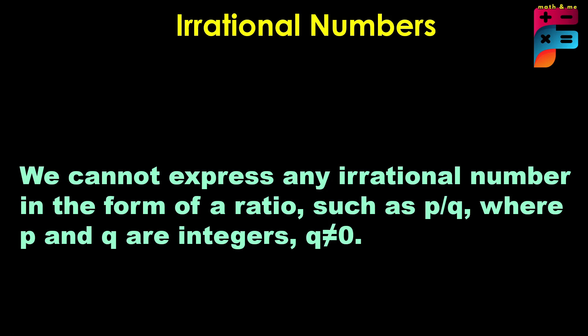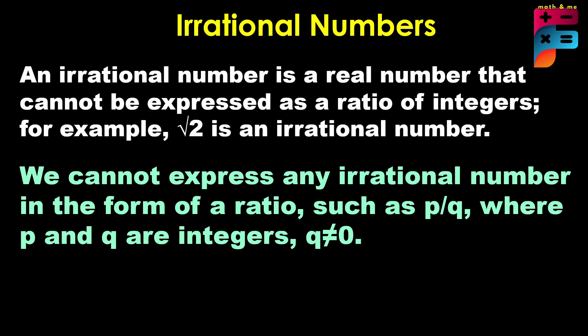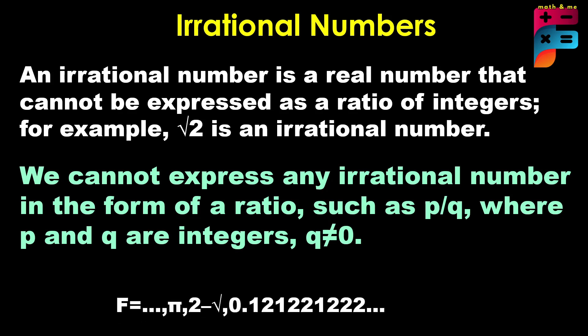Irrational numbers. An irrational number is a real number that cannot be expressed as a ratio of integers. We cannot express an irrational number in the form p/q where p and q are integers and q is not equal to 0. Examples include √2 and π. Note that a non-repeating, non-terminating decimal like 0.1212... cannot be written in p/q form.